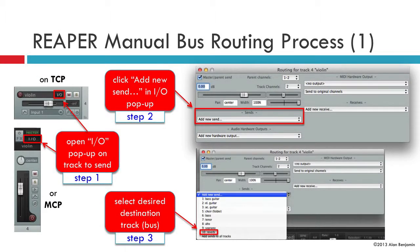To create a new manual bus connection in Reaper, just click on the I/O button of a track in either the TCP or MCP. That will open up a routing window. From there, click on add new send.